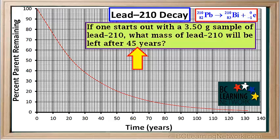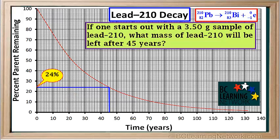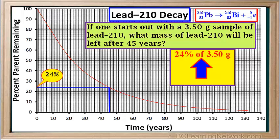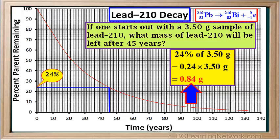Here's another question: if one starts out with 3.5 grams of lead-210, what mass of lead-210 will be left after 45 years? We draw a line from 45 years on the x-axis to the curve, then at the point where it hits the curve, we draw a line over to the y-axis. The line intercepts the axis at 24%. So 24% of the original 3.5 grams will remain: 0.24 times 3.5 equals 0.84 grams of lead-210 left after 45 years.